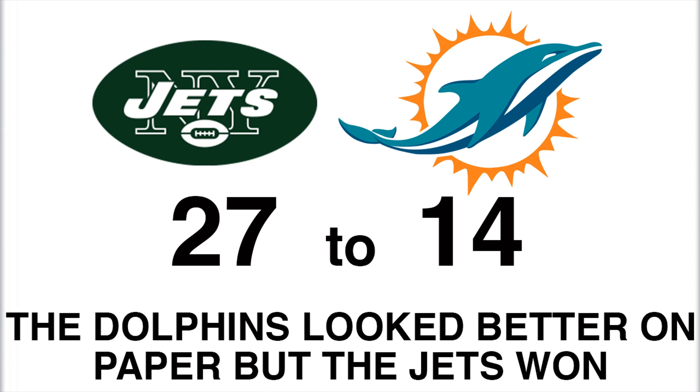Think of the NFL game that happened recently — the Miami Dolphins vs the New York Jets. The Dolphins looked better on paper, but the Jets took a convincing 27-14 win. There are so many initial conditions that it would have been impossible to predict the whole game: air pressure, jet lag, relationship issues — anything that would have caused the players to play differently or the ball to fly differently. If anything was different in the initial setup, the Dolphins might have won instead, but they didn't.